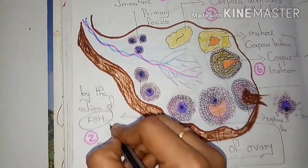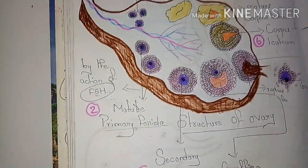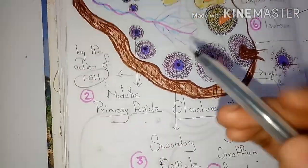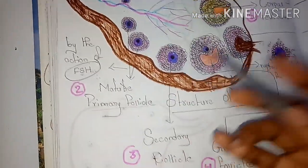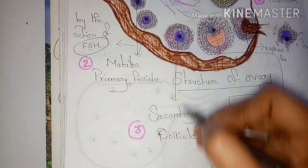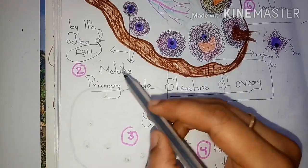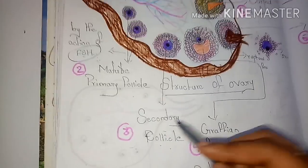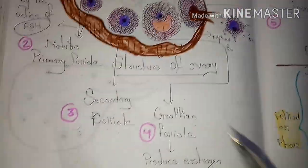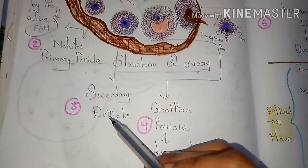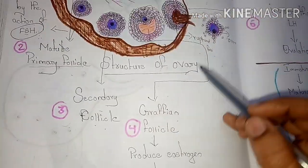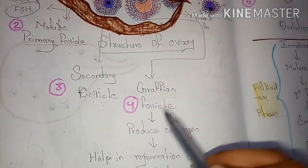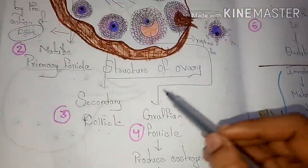After the mature primary follicle is formed, it converts into the secondary follicle — this is the second change in the ovarian cycle. Then the secondary follicle develops into the Graafian follicle, which is the third change occurring in the ovarian cycle.